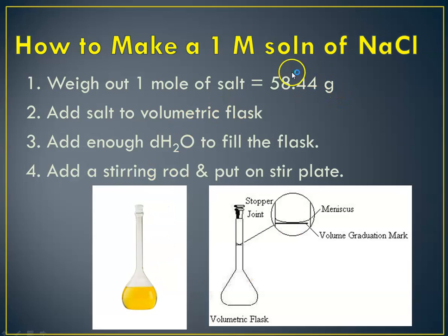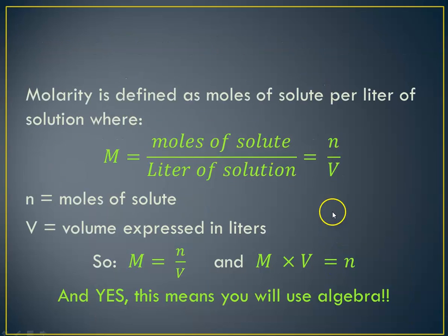So in general, what you do is you mass out however much of the solute that you need. You would put it into your flask and then I would fill it up part of the way like this. Then I would add a stirring rod and put it on a stir plate. Then I would carefully remove my stirring rod and I would dilute it up so that the meniscus was on the line.